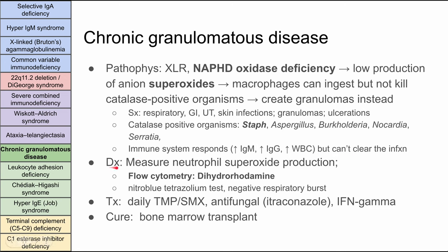Diagnosis is made by measuring neutrophil superoxide production. The best current method is flow cytometry testing for dihydrorhodamine — if that's deficient, it's chronic granulomatous disease. An older test still used is the nitroblue tetrazolium test, which shows a negative respiratory burst. Treatment is daily Bactrim for prophylaxis, antifungals like itraconazole, and interferon gamma can help as well. The cure, like the others, is bone marrow transplant.